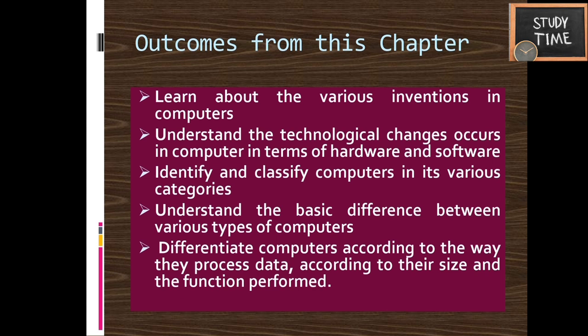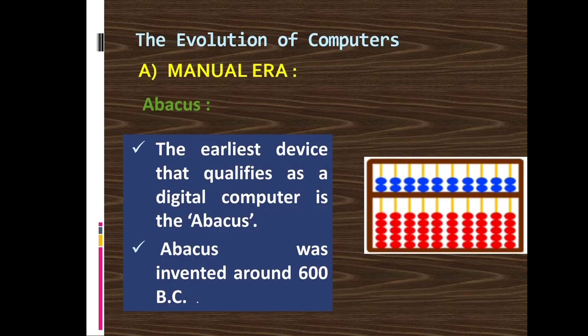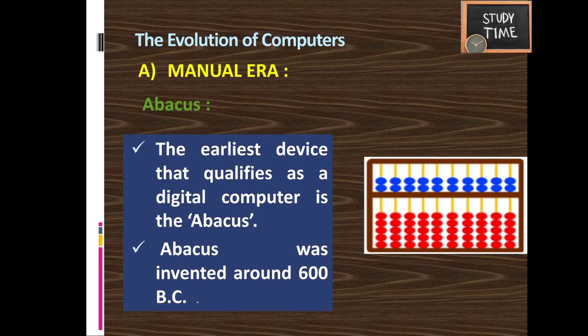The computer we see today was not invented all at once — it has evolved a lot over the last couple of decades. Before computers, we used fingers and grain stones to do simple calculations. After that, manual calculators were invented. In the evolution of computers we are going to see three eras: the manual era, the mechanical era, and the electronic era.